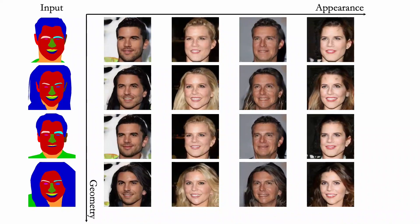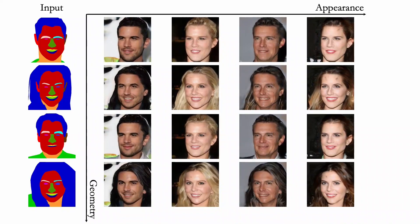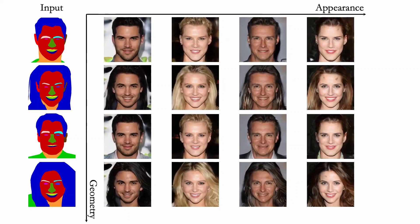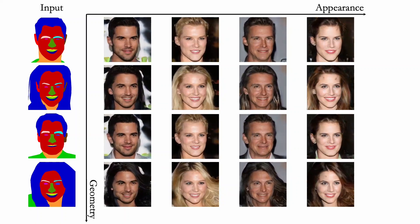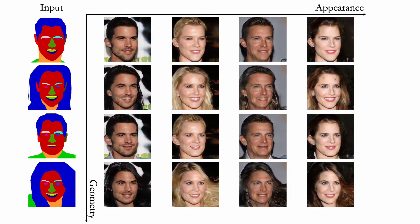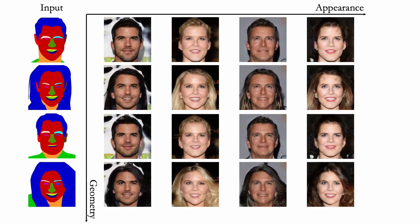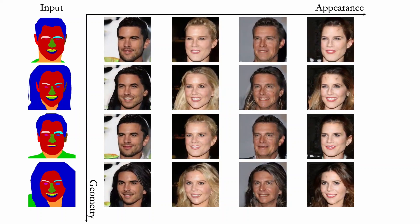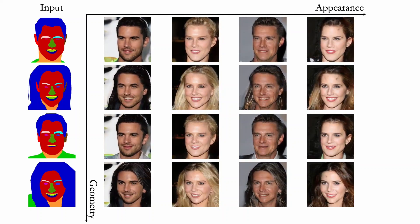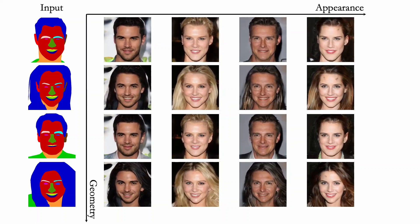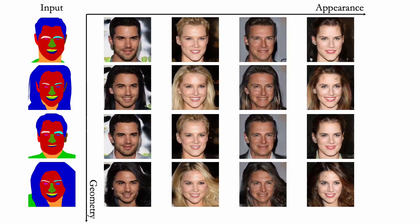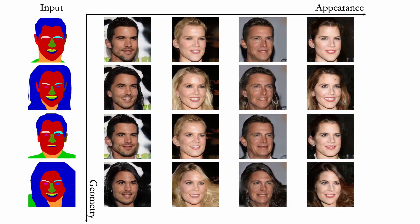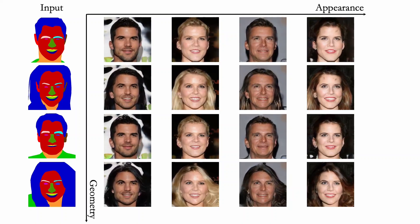We further show a strong disentanglement of geometry and appearance in our 3D representation. Along the horizontal axis, we generate images using the same geometry but different appearance styles, while along the vertical axis, we show the results using the same appearance but different geometries.